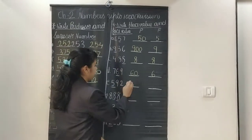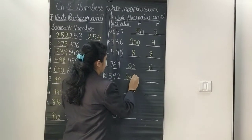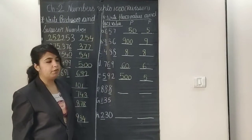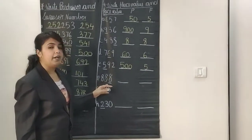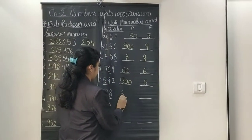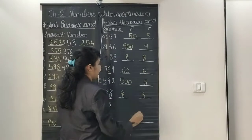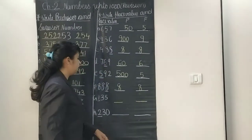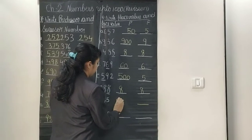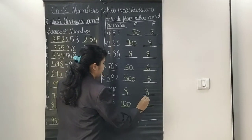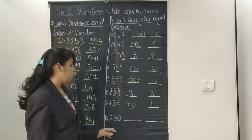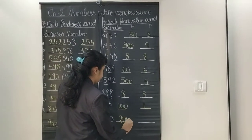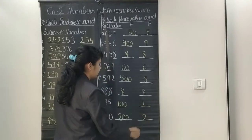For 592 — the place value is 500 and the face value of the underlined digit remains the same, which is 5. Next, 888 — the place value and face value are noted according to the ones place. For 5135, I will write place value 100 and the face value remains 1. The last one is 230 — place value is 200 and the face value of the underlined digit is 2.